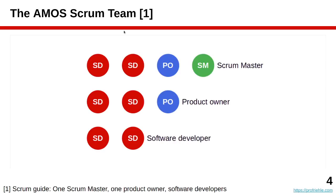In Scrum, which is our development method, student teams consist of nine students usually: six software developers, two product owners, and one Scrum Master. These are the three key roles of a Scrum team, the so-called committed roles. This is how Scrum teams are built and hopefully, if everything works well, this is a stable team over the course of the three months of an AMOS project.